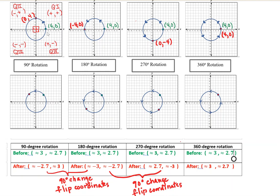Every transformation begins with a pre-image and ends with an image. My pre-image is green — in this case it's a point — and my image is red. Picture this blue circle as the clock face and this green point placed right at the tip of that minute hand. The minute hand is going to rotate in a counterclockwise direction, and we want to see where this point ends up when we've rotated it 90 degrees.